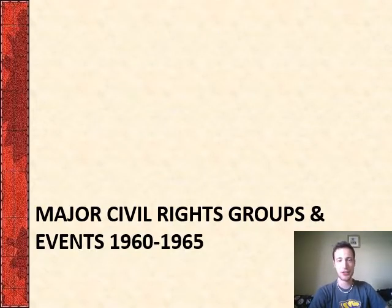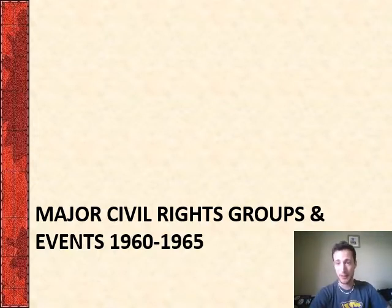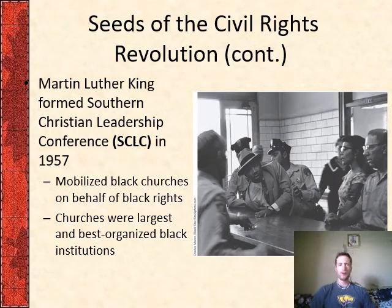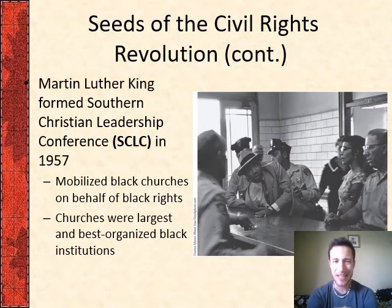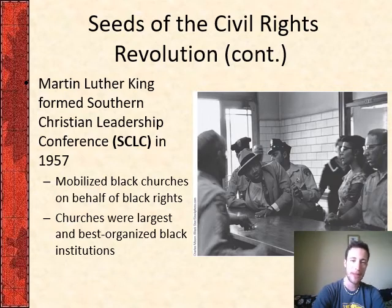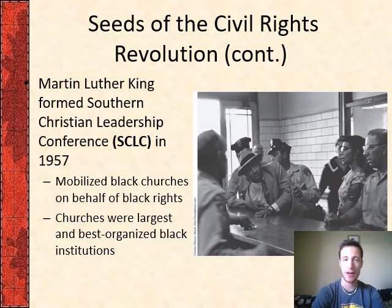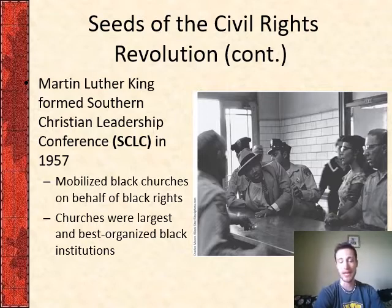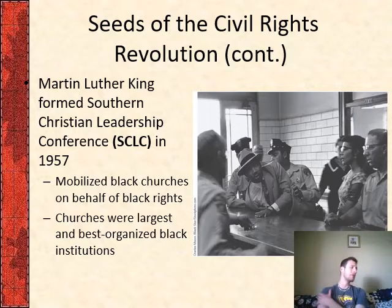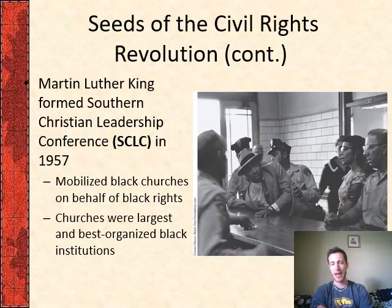Martin Luther King formed the Southern Christian Leadership Conference, the SCLC, in Atlanta in 1957. It had a religious base, mobilized black churches on behalf of black rights, and was a major organized institution that played a huge role in black activism and advocating for African American rights at the beginning and into the 60s. They lose some influence later in the 60s and into the 70s as a more radical movement takes place, but early on they were major actors in the civil rights movement.